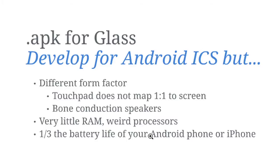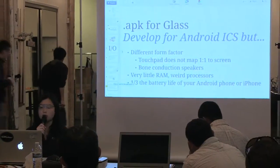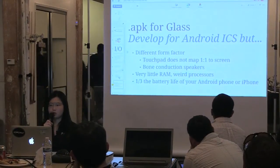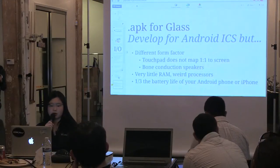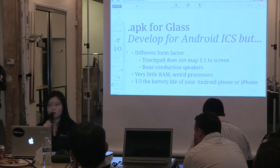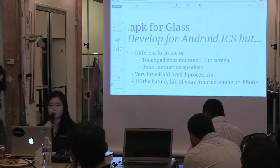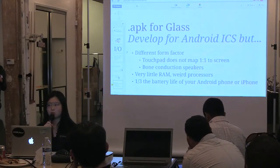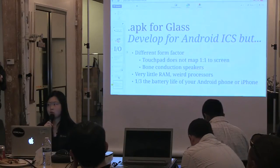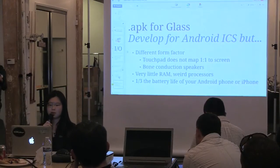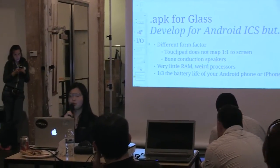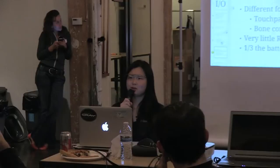When you make an APK for Glass, you're basically developing for Ice Cream Sandwich, Android 4, but it's a different form factor. The touchpad does not map one-to-one to the screen, and you have bone conduction speakers. Keep in mind this is a small embedded device — not your latest quad-core Android phone. It has about 500 megs of RAM to work with. There's also a TI processor rather than a typical Qualcomm chip, making GPU optimization very niche. Battery life is very short.